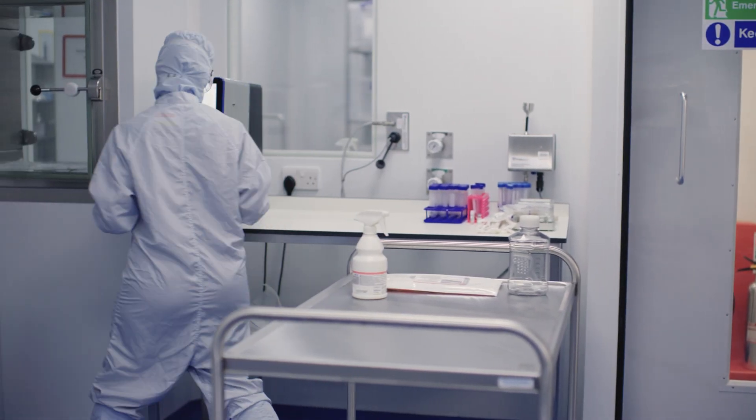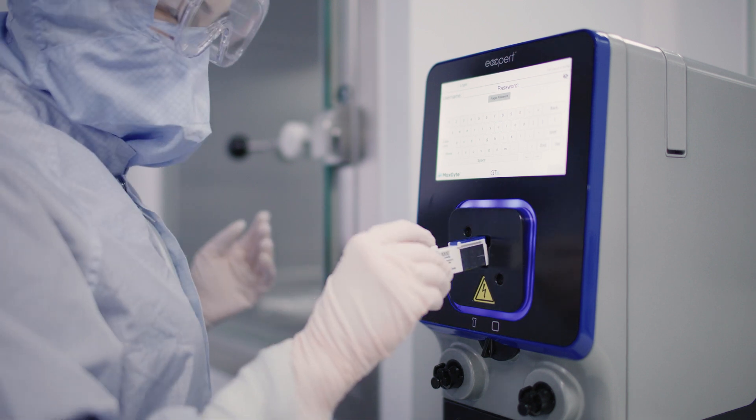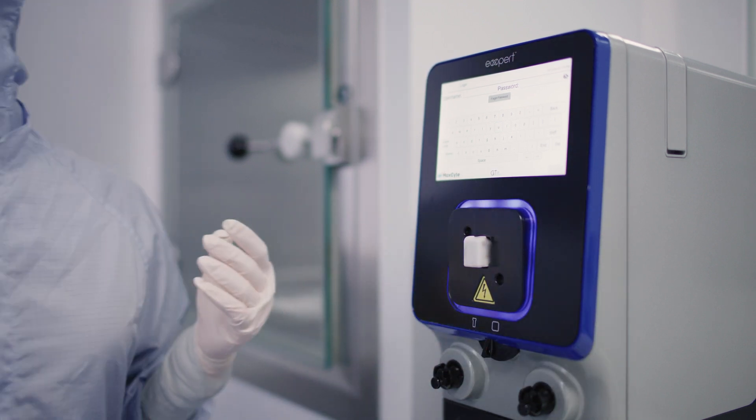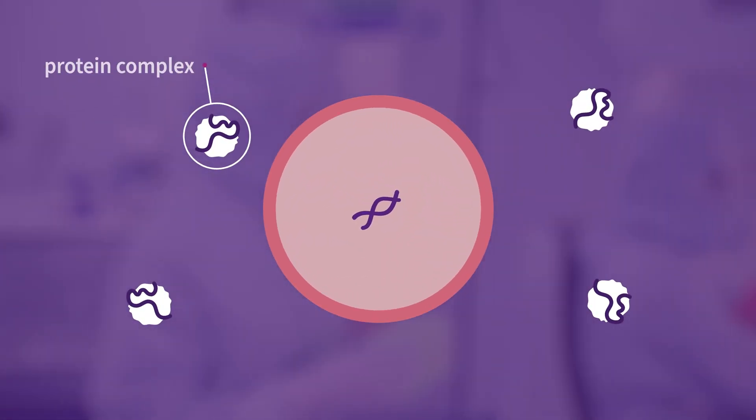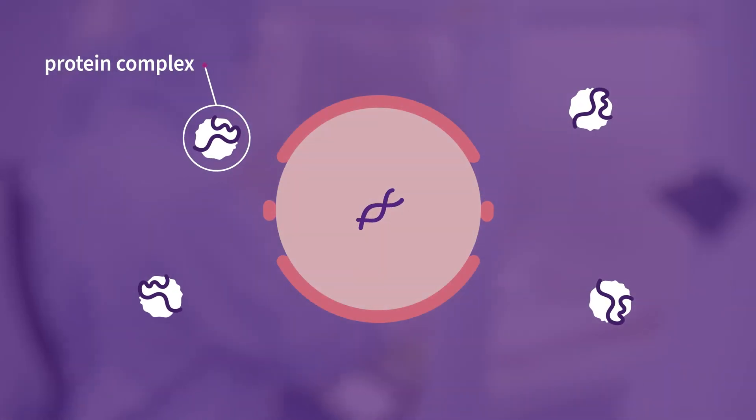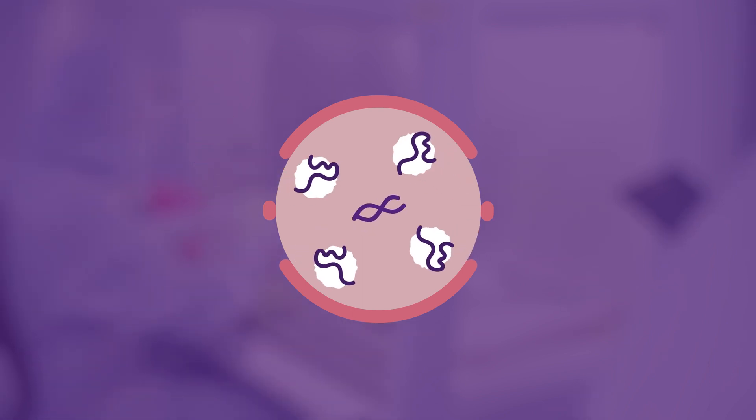For electroporation, all the key components are mixed together and then introduced to the cells in the electroporation machine. Electroporation uses a small electric shock to open channels on a cell's surface to allow the materials to enter the cell.